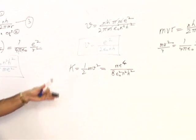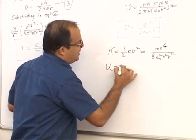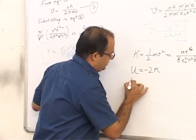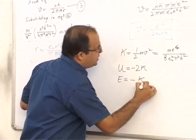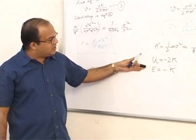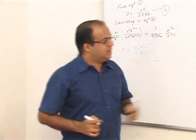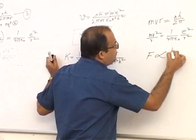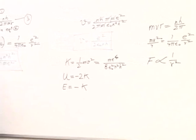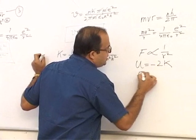Once you know kinetic energy you can get all other forms of energy. Potential energy equals minus 2 times kinetic energy, and total energy equals minus kinetic energy. This relationship is valid whenever a particle moves in a circular orbit under a force that obeys the inverse square law — that is, F ∝ 1/r² — like the electrostatic force or the gravitational force.